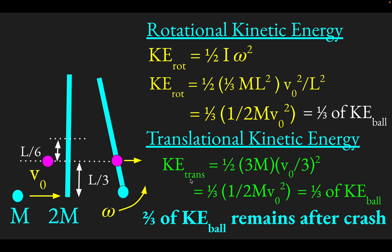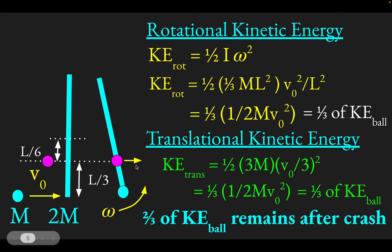So to summarize: one third of the ball's energy goes into translation, one third into rotation, and one third is wasted. Interestingly, if you hit the stick closer and closer to the center, less energy can be dumped into rotation. If you hit the stick dead center, two thirds of the energy gets wasted and only one third remains. This is an interesting scenario for understanding collisions that cause rotation.